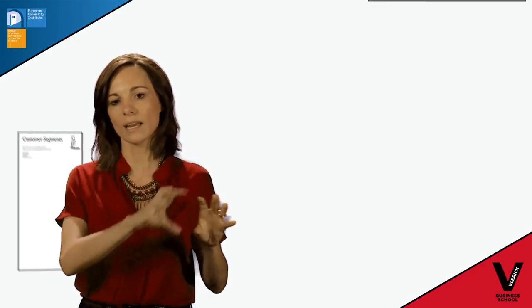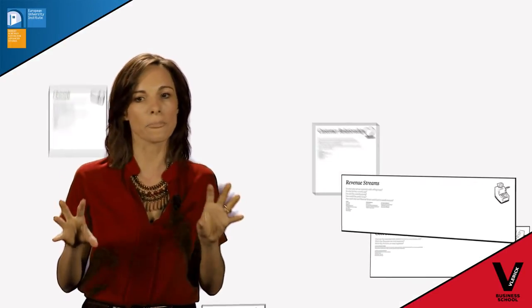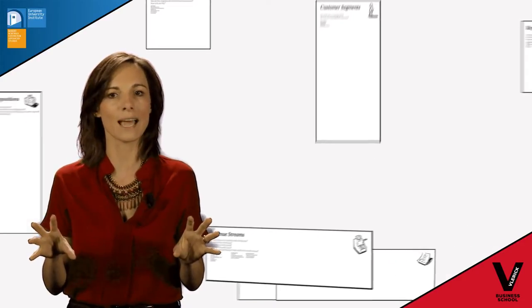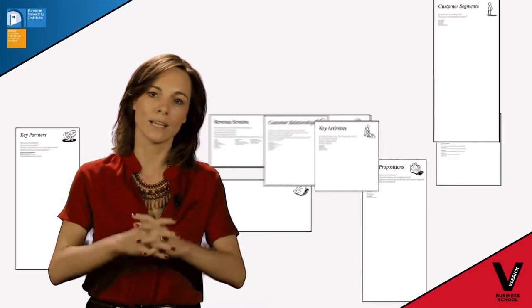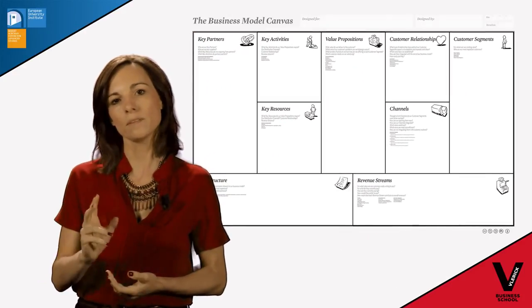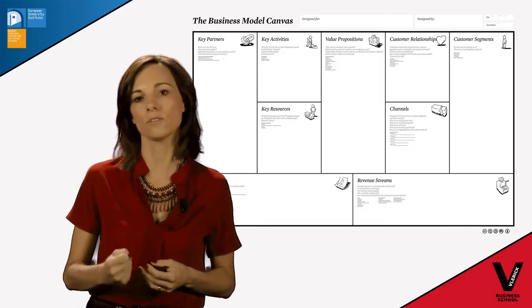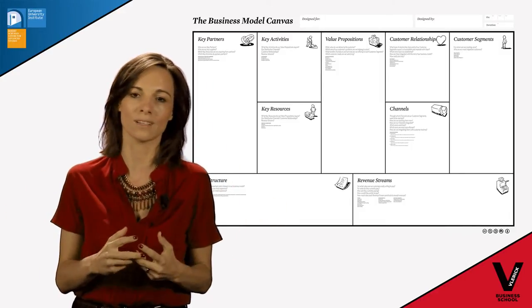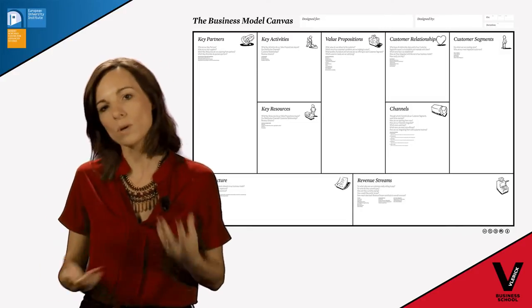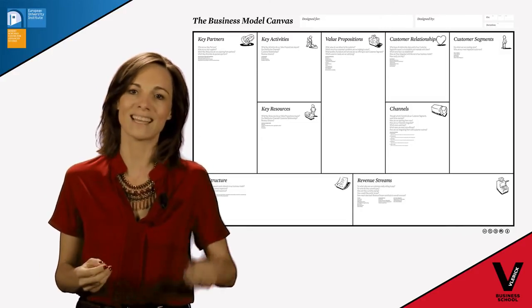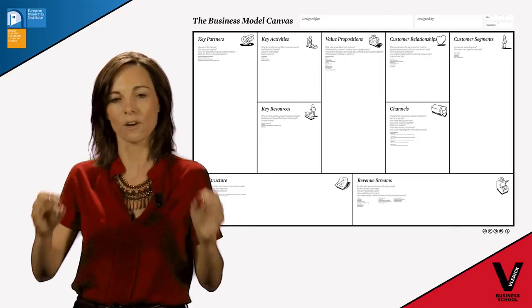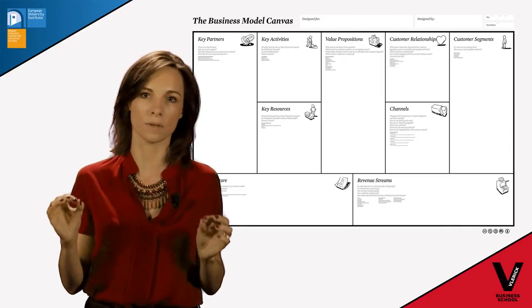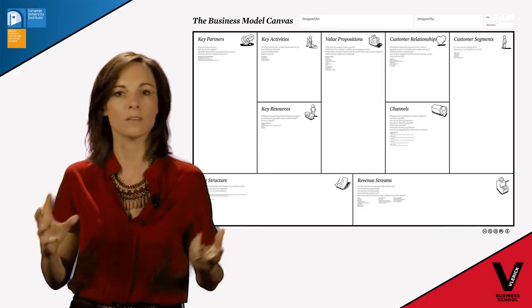Secondly, the Business Model Canvas, although it looks like it contains different pieces, don't think of these different pieces as disconnected from one another. They really need to come together in one unified whole. Business models that are really successful and winning — what you see is how the different pieces of the business model interact with one another. Interaction means that the value of one piece increases because the other is there. So ask yourself, are there interactions in our business model? What are the connections between the different components?